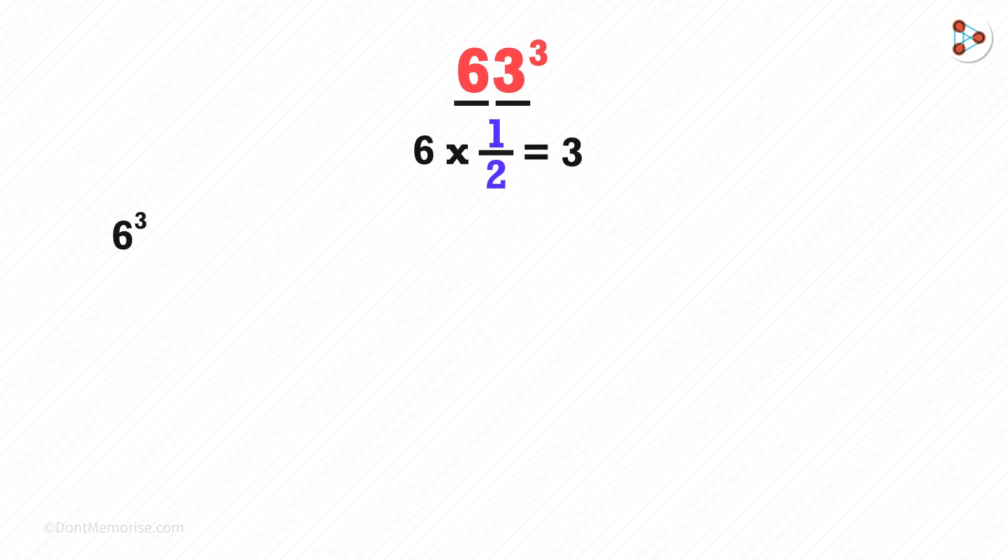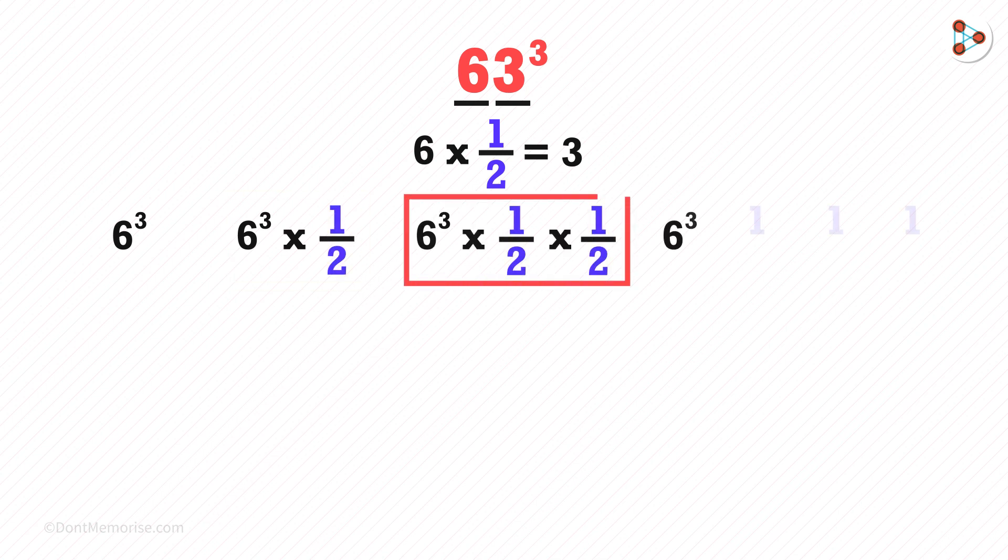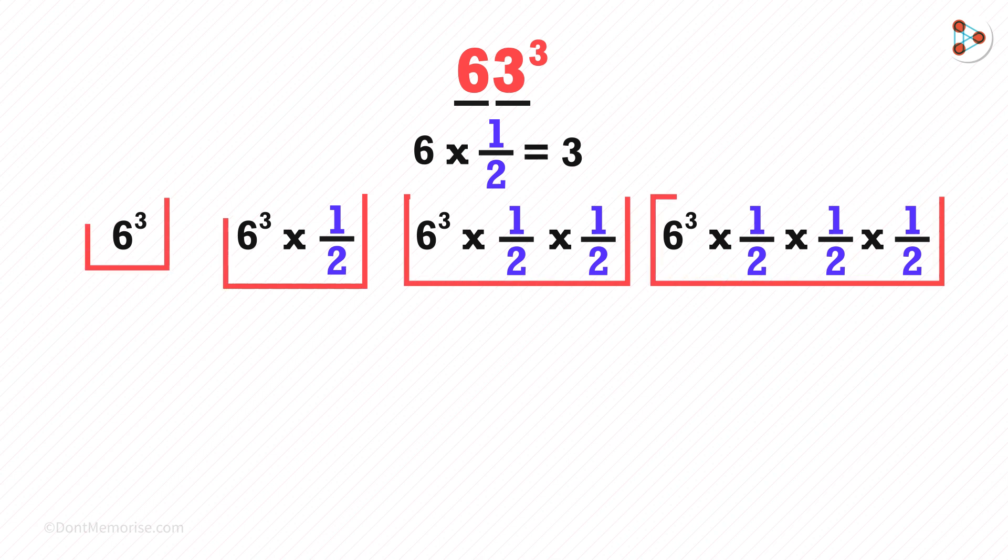On the left side, we write 6 cubed. Then 6 cubed multiplied by half. And then we multiply by half. And then multiplied by half again. So we get 4 parts.